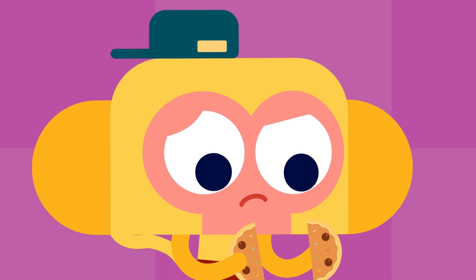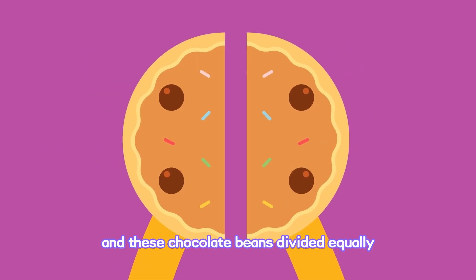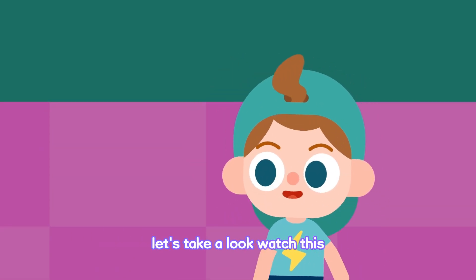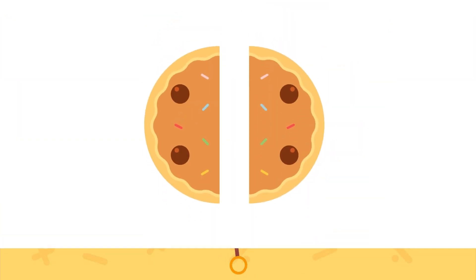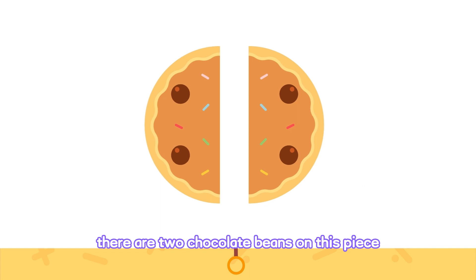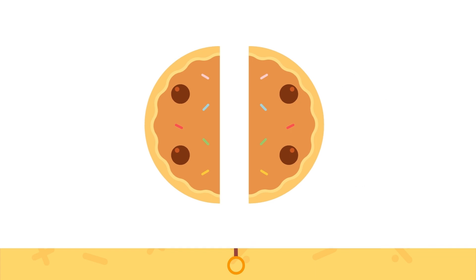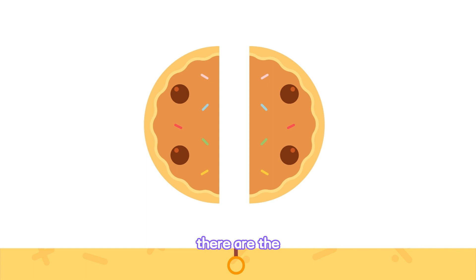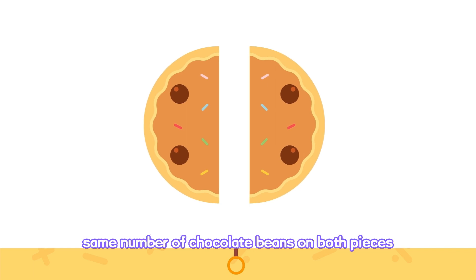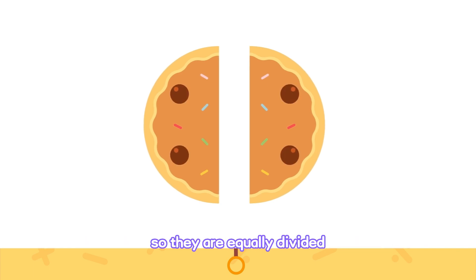But... are these chocolate beans divided equally? Let's take a look! Watch this! There are two chocolate beans on this piece, and two beans on the other piece. There are the same number of chocolate beans on both pieces, so they are equally divided.